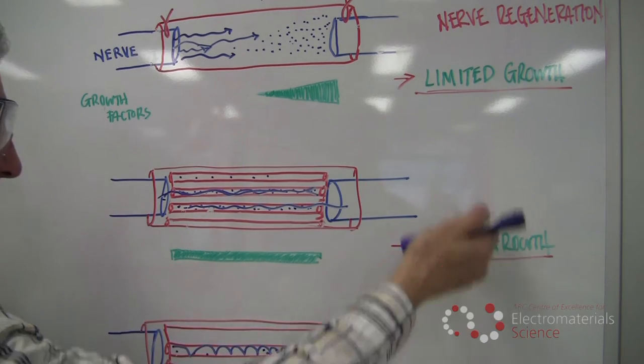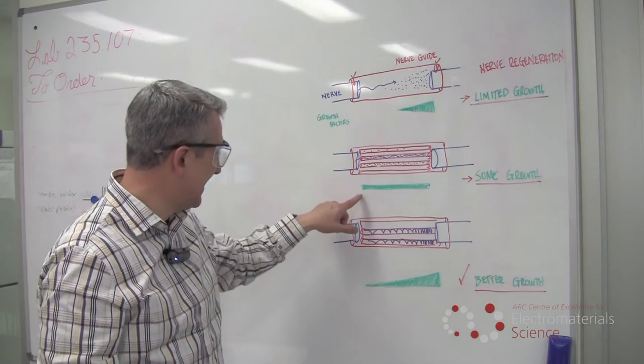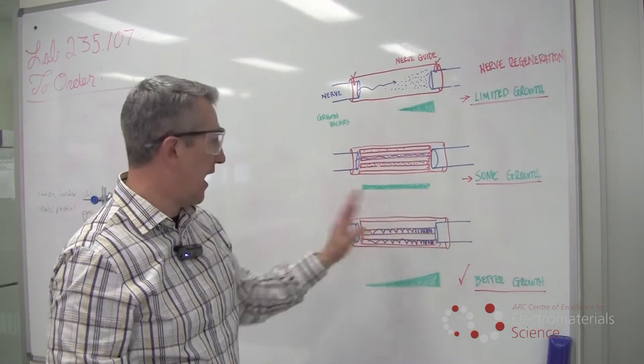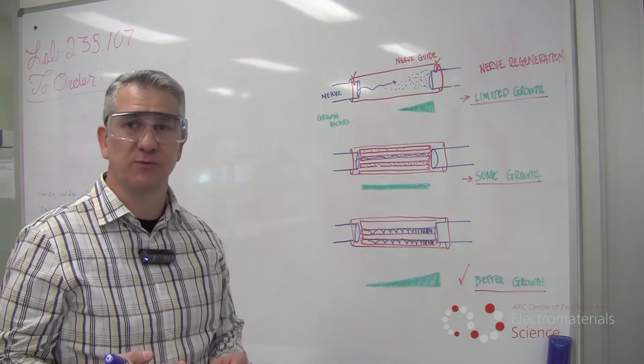And that works better than the previous one, but to a limited extent. And the limitation that it has is that the concentration of the growth factors is the same across the gap, and that is okay, but it's not what neurons prefer.